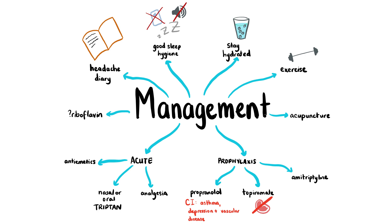Adopt new, good sleep hygiene habits. Drink sufficiently and exercise. In an acute attack, a triptan can be given nasally or orally, as well as simple analgesia and antiemetics if necessary. Prophylaxis with either propranolol, topiramate or amitriptyline may be appropriate for recurrent migraines, that is two or more attacks per month affecting the patient's quality of life. Propranolol is preferred instead of topiramate in women of reproductive age, due to the risk of teratogenicity and reduced effectiveness of hormonal contraception.